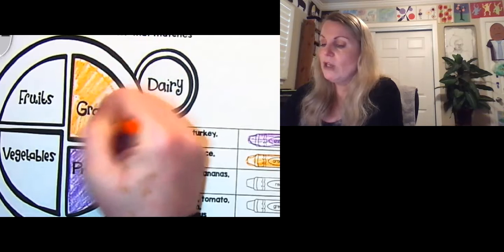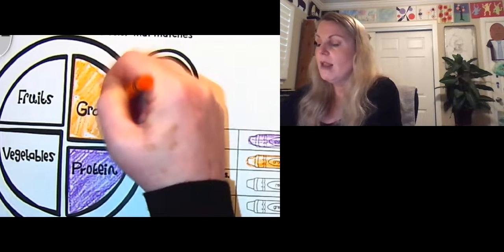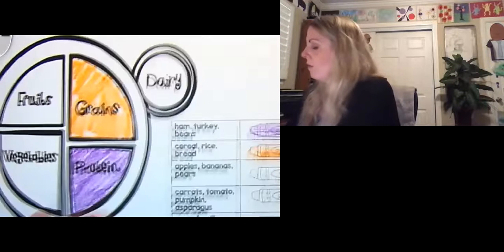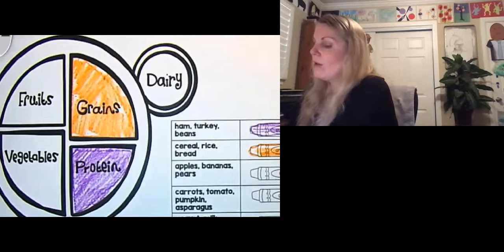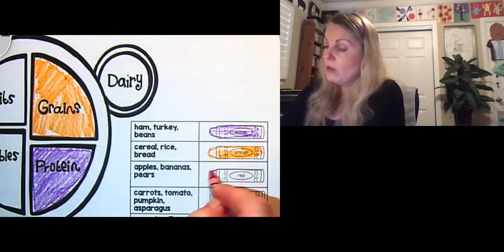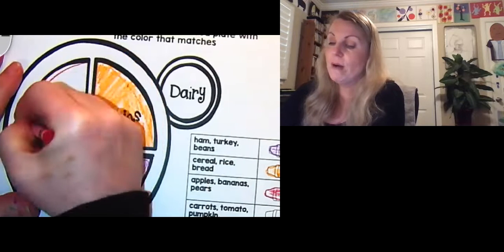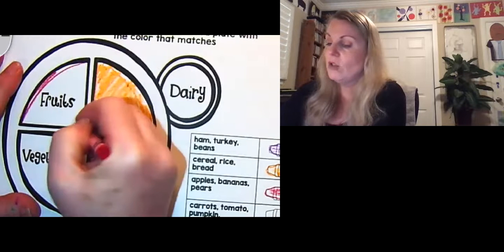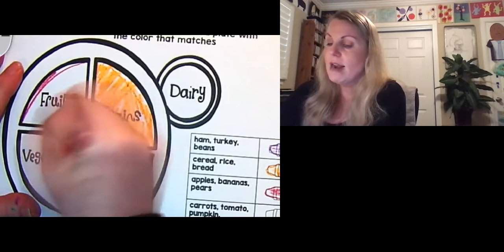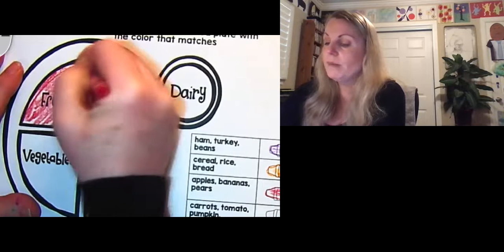So when we're eating we should have protein, we should have grains, and then we're gonna get out our red crayon. And our red crayon says apples, bananas, and pears. So now we're gonna start talking about some fruit. Now fruit is good for your body. It's kind of nature's dessert, right? Nature's dessert. It's delicious, sweet, yummy.